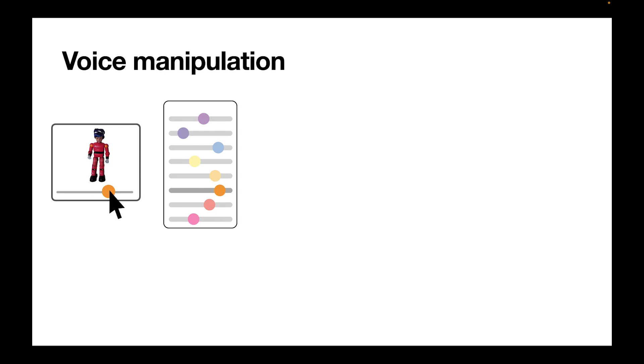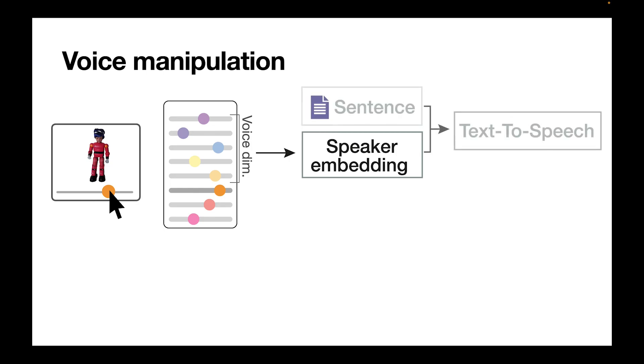And the voice manipulation is defined by various parameters. The first five parameters are voice dimensions. And what they do is they change the principal components on speaker embeddings. And together with the sentence, they are fed into a text-to-speech model. And this text-to-speech model creates a speech fragment.